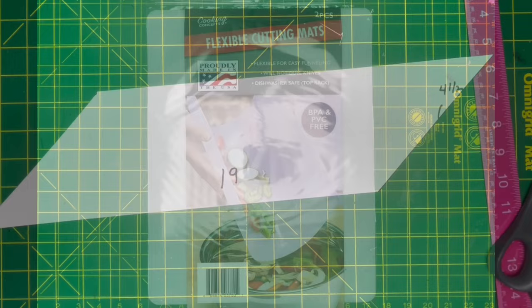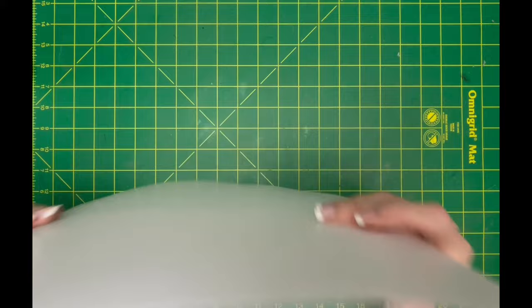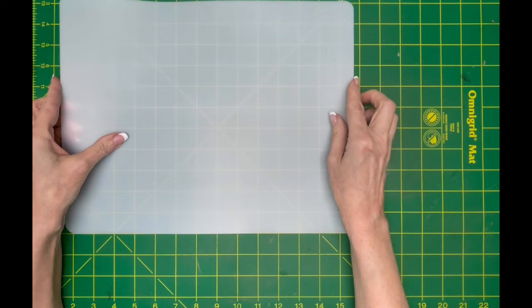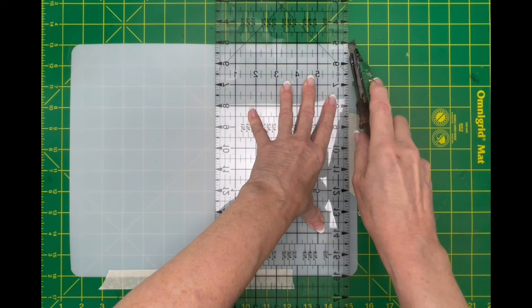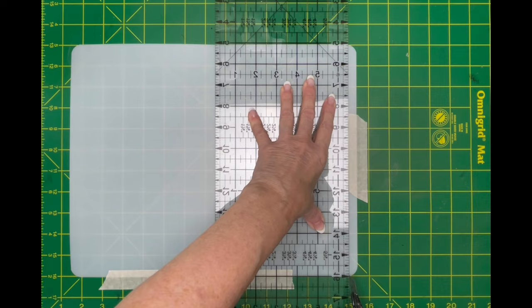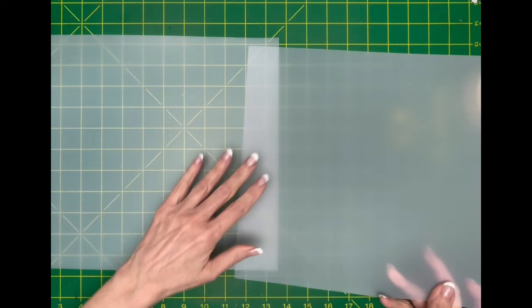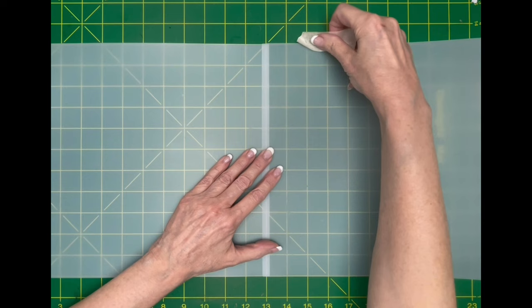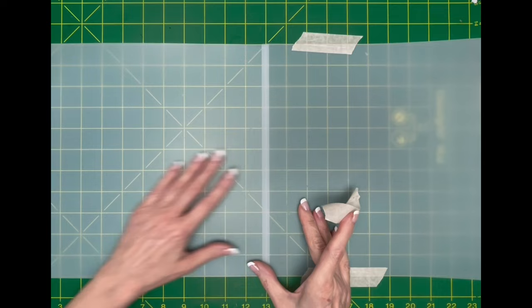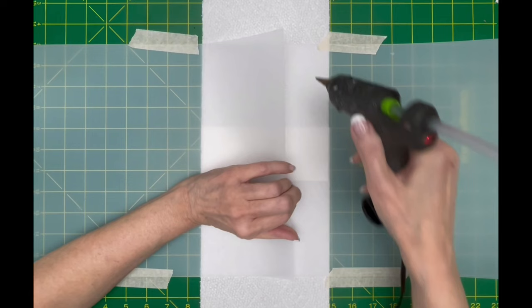You need two flexible cutting mats from Dollar Tree. I'm going to cut them both at the same time so that they're exactly the same. And what we're doing is cutting off the curved edge because we're going to be gluing them together. So I like to use a utility knife for this, and I usually score it first, and then off-camera cut it a bunch more times until it's all the way through. Next, I overlap them in the middle, and because I'm using a grid, I can get them really accurate. I like to tape everything down because these slide all over the place. So I tape it all down, and then I'm going to use hot glue to join the pieces together.